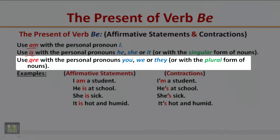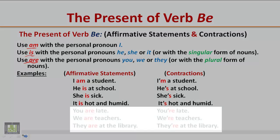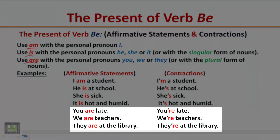Use 'are' with the personal pronouns you, we, or they, or with the plural form of nouns. Examples: You are late / You're late. We are teachers / We're teachers. They are at the library / They're at the library.